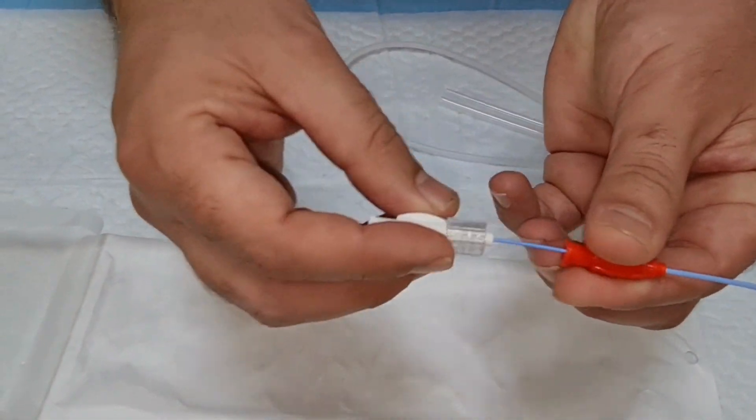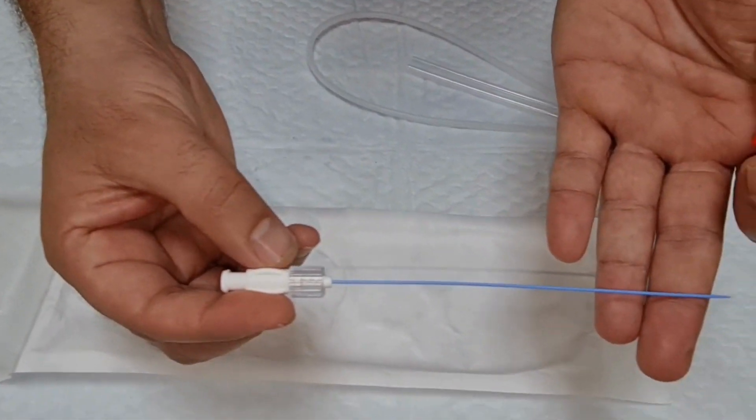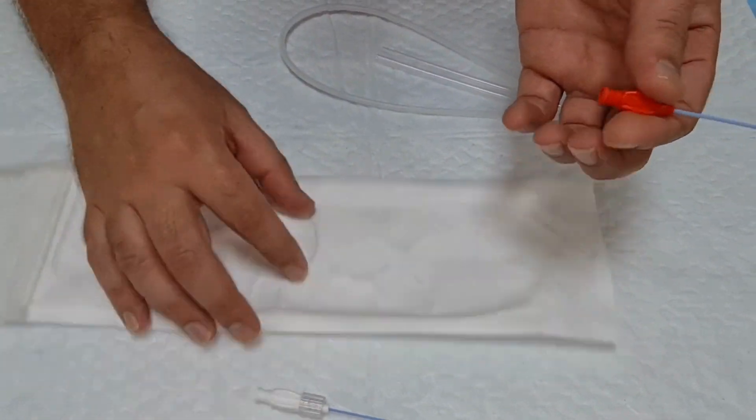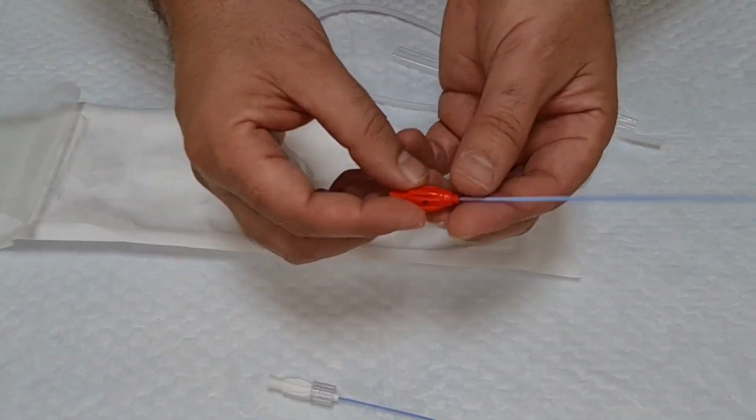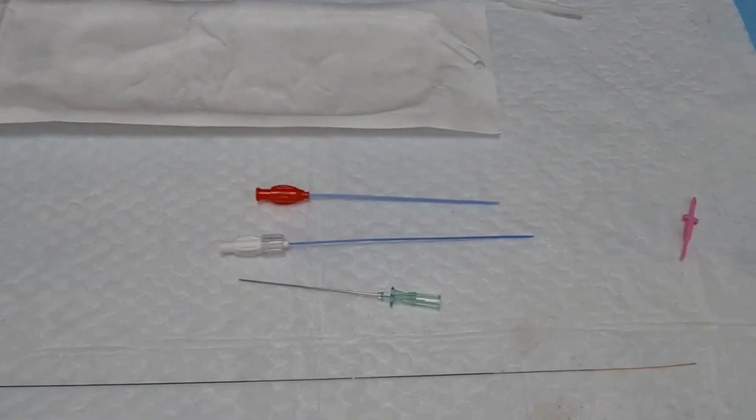This is the dilator. And this is the sheet. So this is completely a micropuncture set.